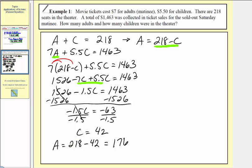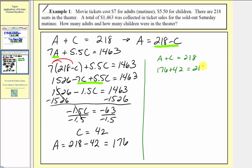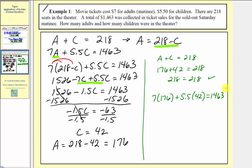Before writing our final answer, let's check the solution to make sure it satisfies both equations. For A plus C equals 218: one hundred seventy six plus forty two equals two hundred eighteen — this checks out. For the second equation, seven A plus five point five C equals one thousand four hundred sixty three: seven times 176 is one thousand two hundred thirty two, and five point five times 42 is two hundred thirty one. The sum is one thousand four hundred sixty three, so our solution also satisfies the second equation.